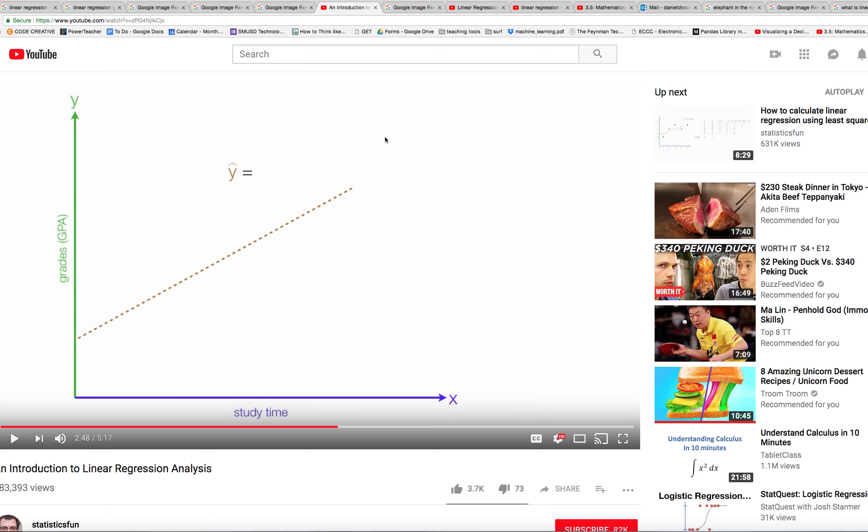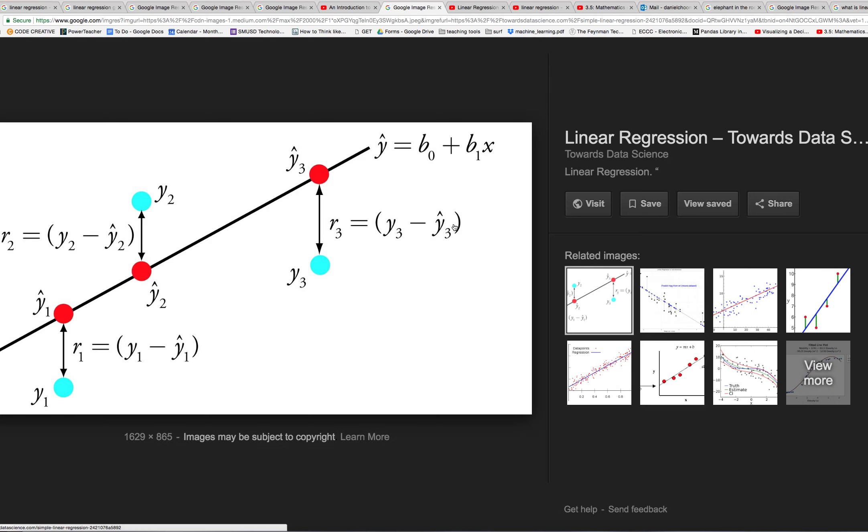And then others might have an A, and the study time will be very high, like six hours a day, so they would be over here. And if we went ahead and filled up this whole chart, that would be us giving the linear regression algorithm all of the data. So this chart is all filled up, and we could see something like this.